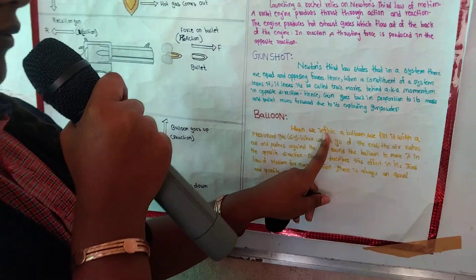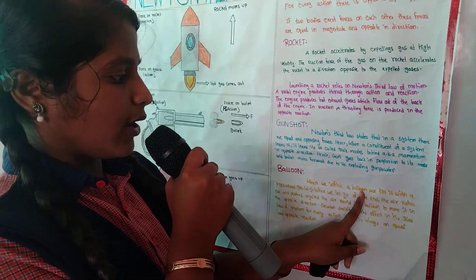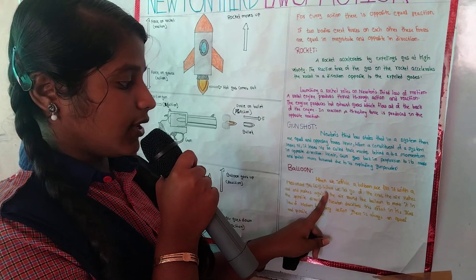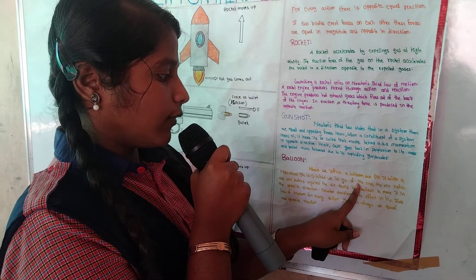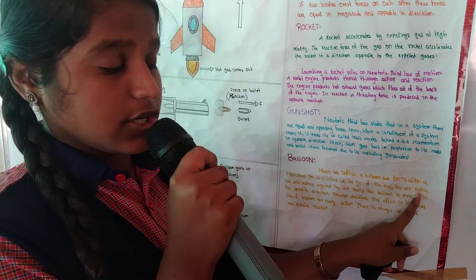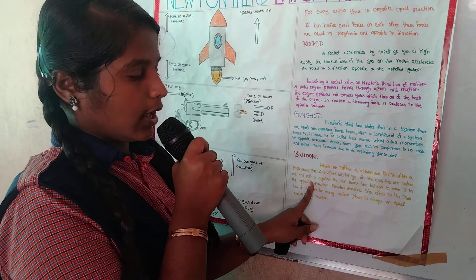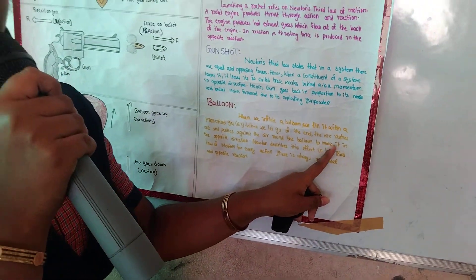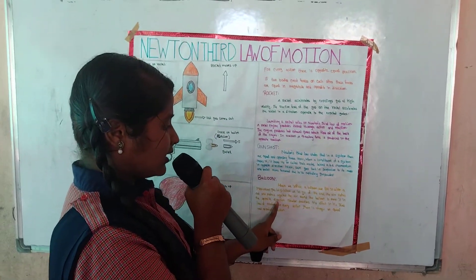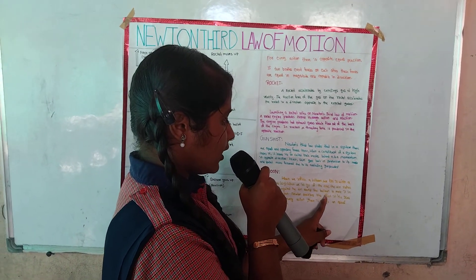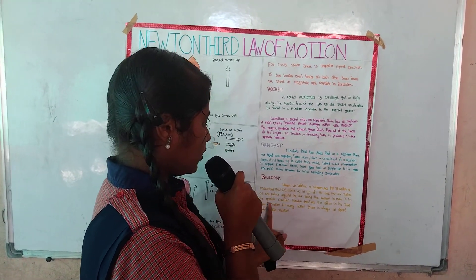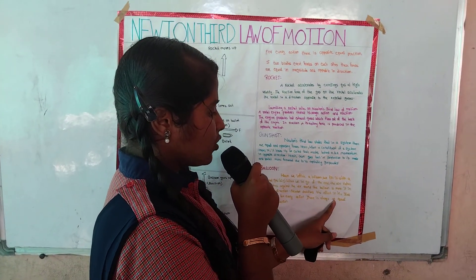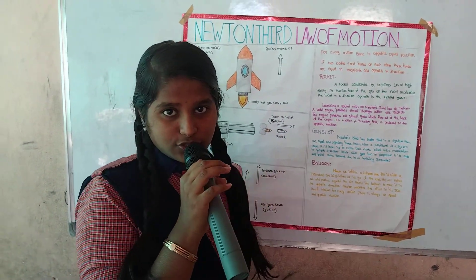When we fill a balloon with pressurized gas and let it go, the air thrusts out and the thrust against the surrounding air propels the balloon in the opposite direction. Newton described this effect in his Third Law of Motion: for every action, there is always an equal and opposite reaction. Thank you.